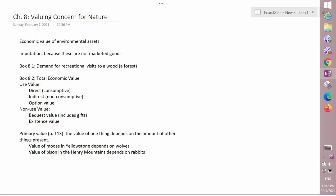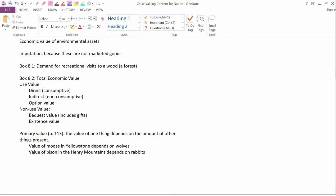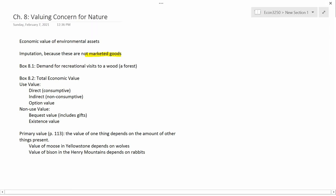We're now going to start Chapter 8, which is entitled Valuing Concern for Nature. Many natural amenities don't have any market price, so these are not marketed goods. But that certainly doesn't mean that they're not valuable. And so the question we're going to address in different ways throughout this entire chapter is, how do we think about the economic value of non-marketed environmental assets?